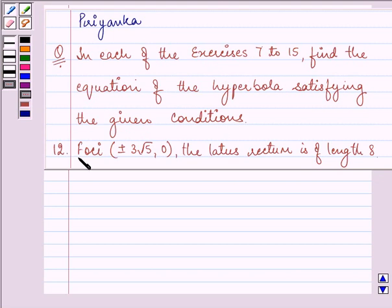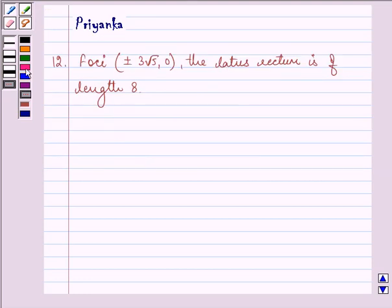Foci is given as plus minus 3 root 5, 0 and the latus rectum is of length 8. So let us proceed with our solution.